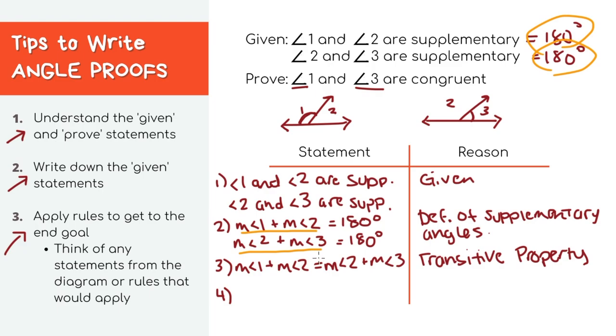See how in our last step we have angle two on both sides of the equation? We can actually subtract the measure of angle two from both sides of the equation. It's just like normal algebra. If you have a random x on both sides of the equation, you can simplify it by subtracting x from both sides. So this is like the same thing but with angles.